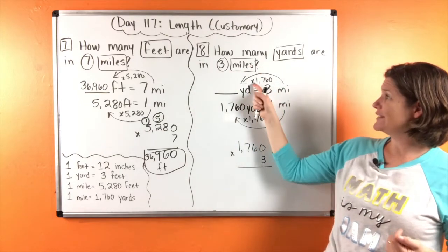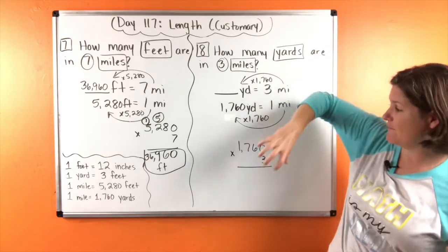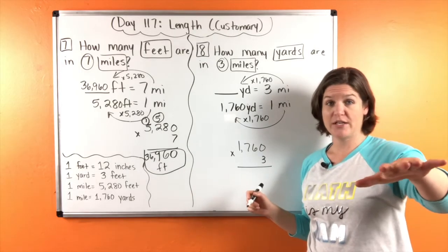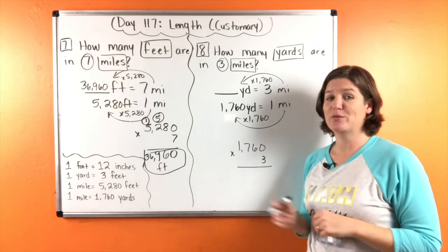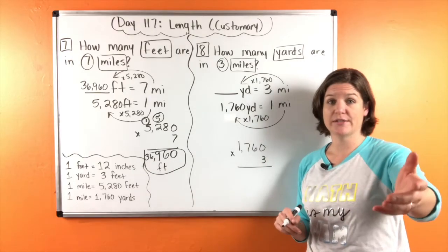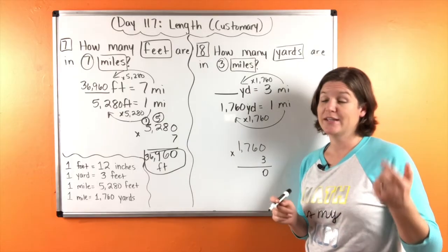And now we have three times 1,760, which I've taken off and I've put it right there. So if you need to get caught up with me, press pause if you need to, and then press play when you're ready. Okay. So we have three times zero is zero. Three times six is 18.